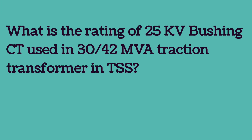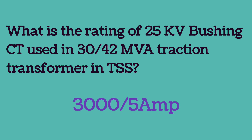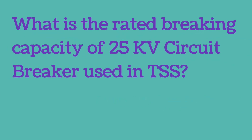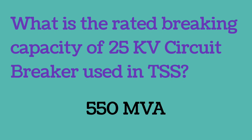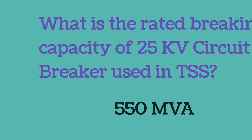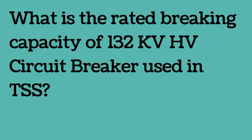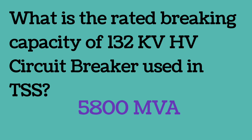The rating of 25 kV bushing CT used in a 30/42 MVA traction transformer in TSS is 3000/5 Amp. The rated breaking capacity of a 25 kV circuit breaker used in TSS is 550 MVA. The rated breaking capacity of a 132 kV circuit breaker used in TSS is 5800 MVA.